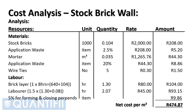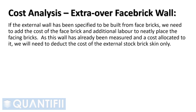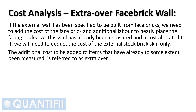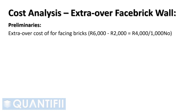The final section we will run through is extra over for face brickwork. If the external wall has been specified to be built from face bricks, we need to add the cost of the face brick and additional labor to neatly place the facing bricks. As this wall has already been measured and a cost allocated to it, we will need to deduct the cost of the external stock brick skin only. The additional cost to be added to items that have already to some extent been measured is referred to as extra over. The cost of face bricks is 6,000 Rand less 2,000 Rand for stock bricks; therefore the extra over cost is 4,000 Rand per thousand bricks.